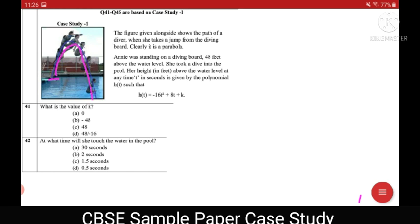Now Annie standing on the diving board which is 48 feet above level and she takes a dive into the pool, her height in feet at any time t is given by this polynomial. The first question based on this is find the value of k. Now in this expression we have three things: we have h height at any time t, we have the time t and we have k.